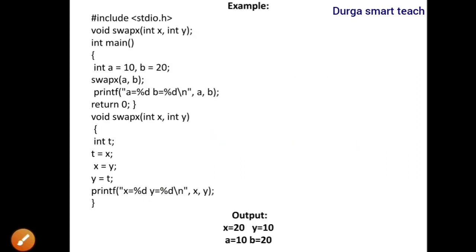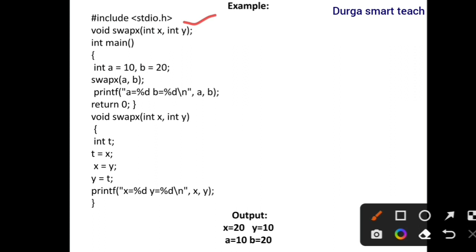Let's see the example. Here, hash include stdio.h is the header file. I am declaring one function. The return type is void, the function name is swapx, and int x, int y are the parameters. The function declaration should be terminated with a semicolon.